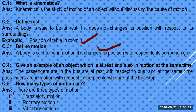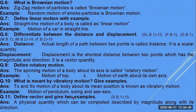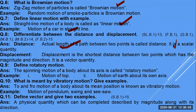There are three types of motion: translatory motion, rotatory motion, and vibratory motion. Brownian motion is the irregular zigzag motion of a particle — it is random motion. Linear motion: motion of a body in a straight line, e.g., a car on a straight road.